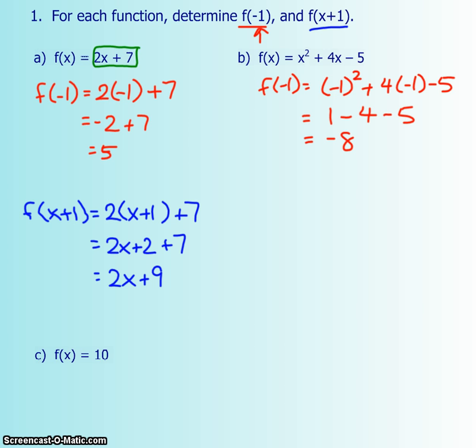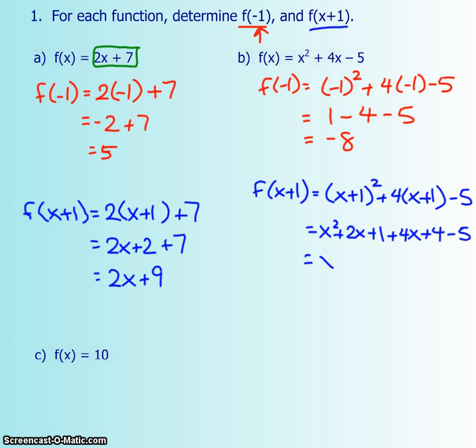And then the second one, f at x plus 1. And then wherever we see an x, we're going to put x plus 1 in brackets squared, 4x plus 1 minus 5. And then we're going to expand and simplify, so doing FOIL, and then distributive law, and then we had that 5. So that's x squared, 6x's, and no constants, so the 1, the 4, and the negative 5 cancelled out.